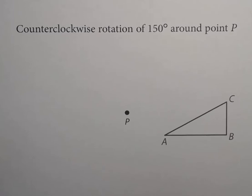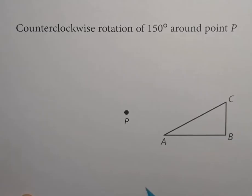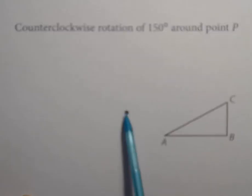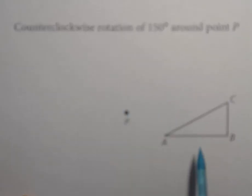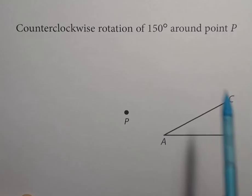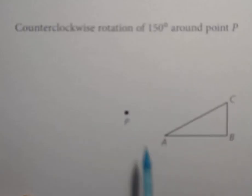In this video, I want to show you how to rotate a figure around a point. In this example, it says counterclockwise rotation of 150 degrees around point P. That means point P is the center of this circular path that triangle ABC is going to rotate around.